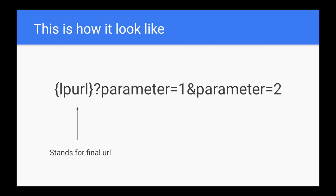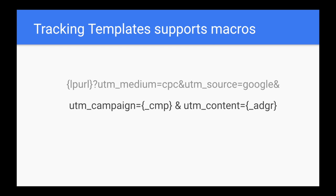The only thing you have to remember is that if your final URL already has a parameter with the same name — for example, parameter equals five — it will be overwritten. By the way, I have a mistake on this slide: I have the same parameter names, I should have called them parameter A and parameter B. So whenever an LP URL comes into these templates, it will be overwritten by these parameters if they have the same name, or just appended if the names differ.